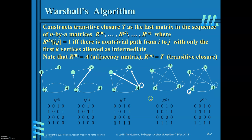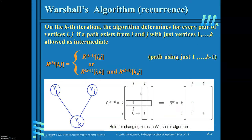Before applying Warshall's algorithm, I will explain what transitive closure of a graph is. If there is no direct edge from Vi to Vj but you introduce vertex Vk as the intermediate vertex, you can get the path from Vi to Vj. So transitive closure of a graph will tell you whether there exists a path between every pair of vertices or not.